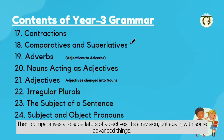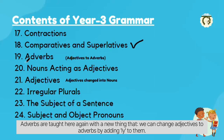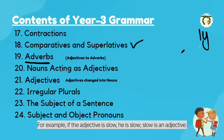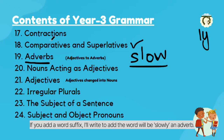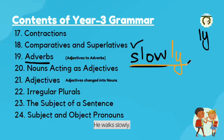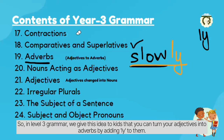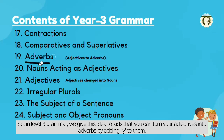Then comparatives and superlatives of adjectives — it's a revision but again with some advanced things. Adverbs are also taught here, with a new concept that we can change adjectives to adverbs by adding '-ly' to them. For example, if the adjective is 'slow' — 'he is slow' — if you add the suffix '-ly', the word becomes 'slowly', which is an adverb: 'he walks slowly'. In level 3 grammar, we give kids the idea that you can turn adjectives into adverbs by adding '-ly'.